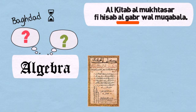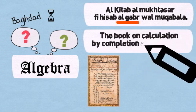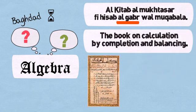So what does this title mean? The English translation of the title is The Book on Calculation by Completion and Balancing. Now let us look at a few more definitions.